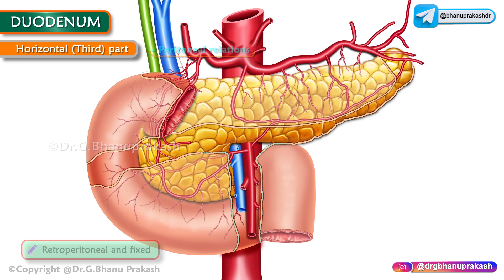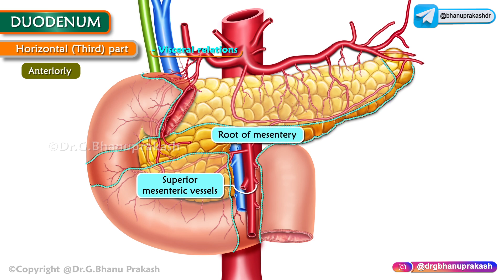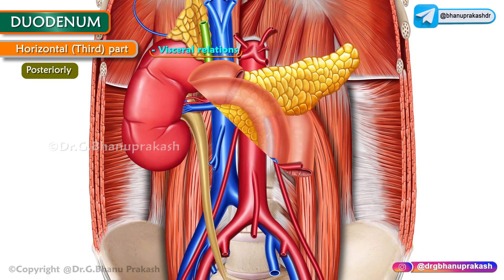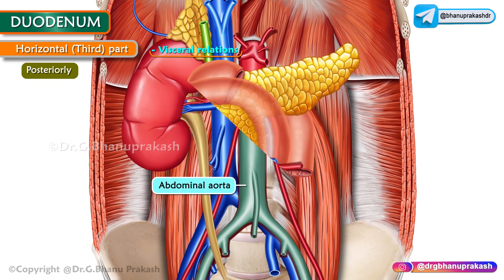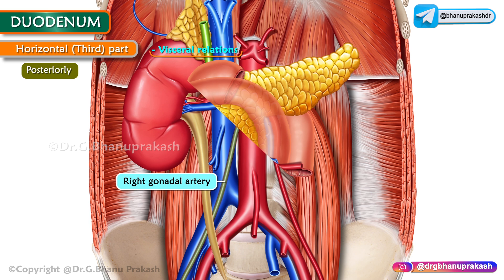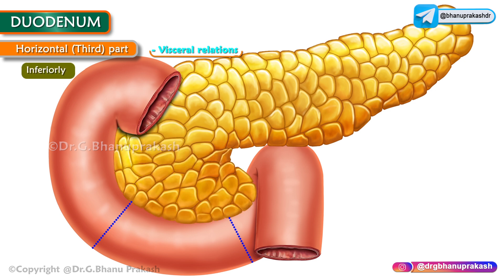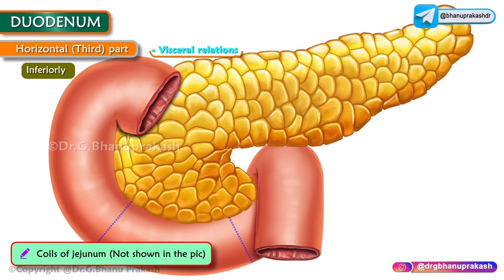The visceral relations of the third part: anteriorly — superior mesenteric vessels and the root of the mesentery; posteriorly — right psoas major, inferior vena cava, abdominal aorta with the origin of the inferior mesenteric artery, and the right testicular and ovarian vessels; superiorly — head of the pancreas and uncinate process; inferiorly — coils of jejunum.